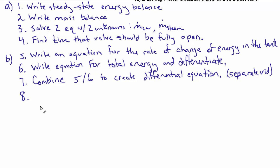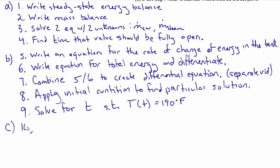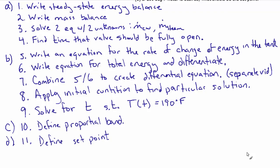We'll apply the initial condition to find the particular solution and then solve for the time at which temperature equals 190 degrees. For Part C, we'll define what a proportional band is, and for D, we'll define the set point. Each individual piece of Parts A and B could be its own question on the test, so it's worth going through slowly to really break it down.